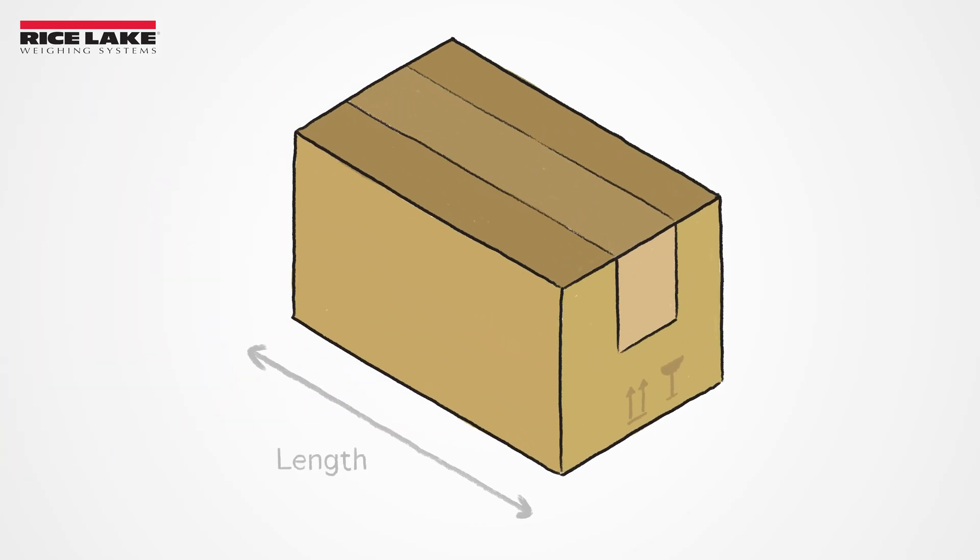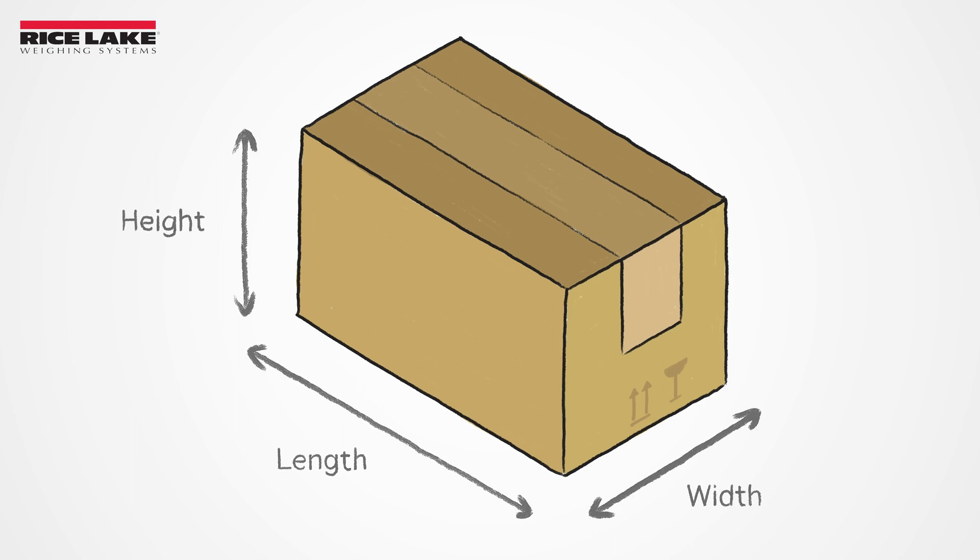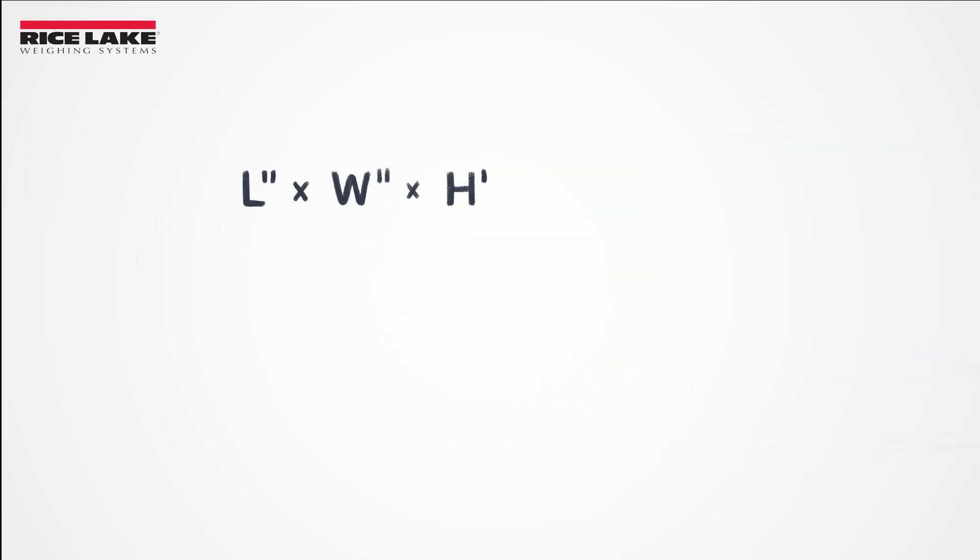To calculate dimensional weight, begin by measuring an item's length, width, and height. Next, use the dimensional weight formula: length times width times height, and divide by the carrier's official divisor.